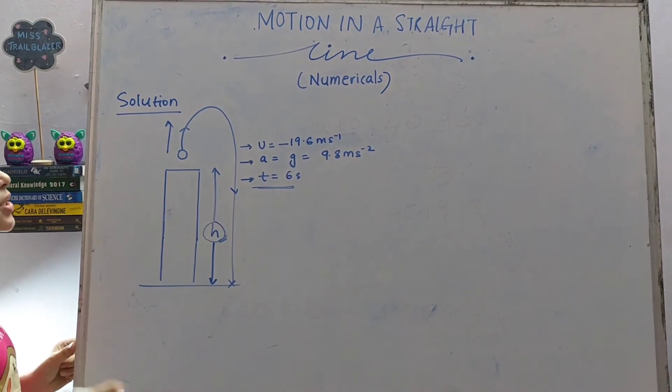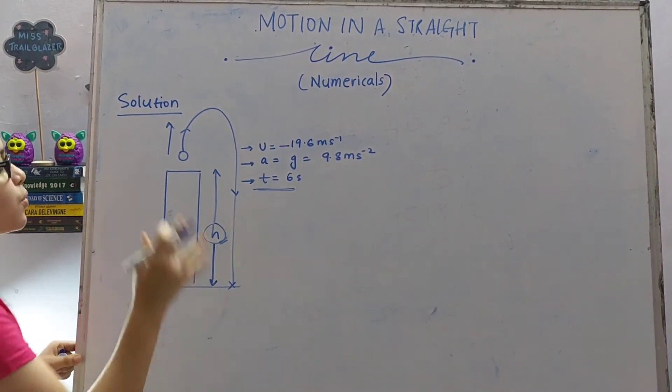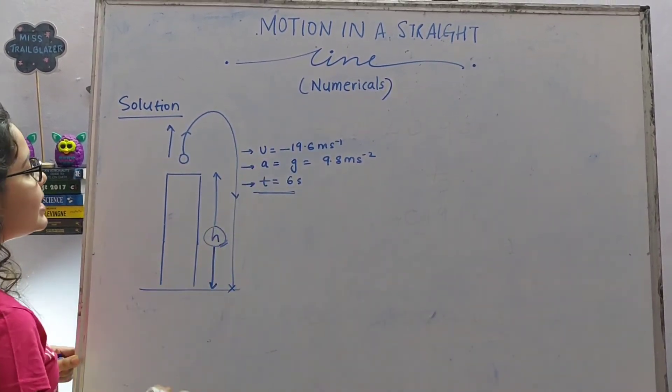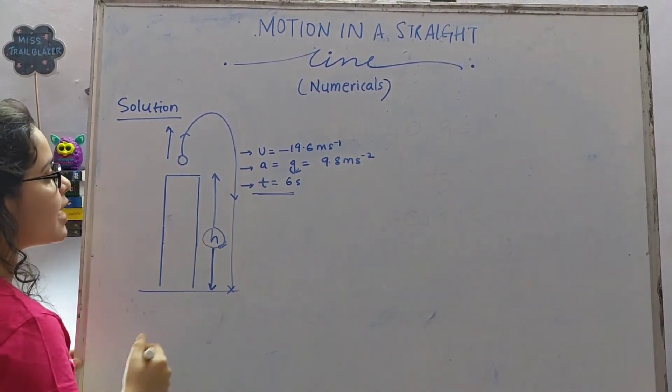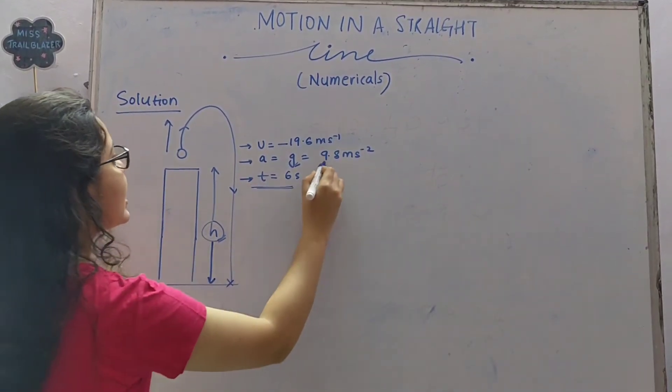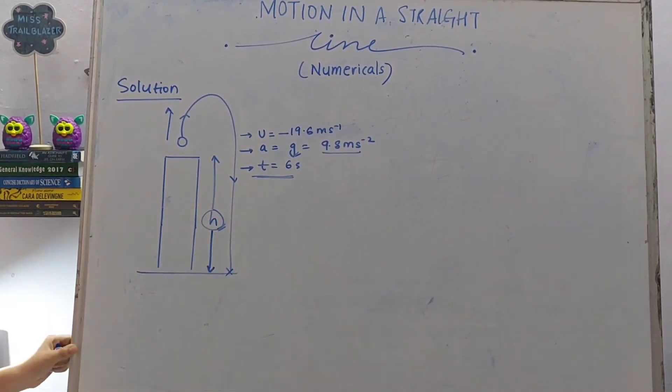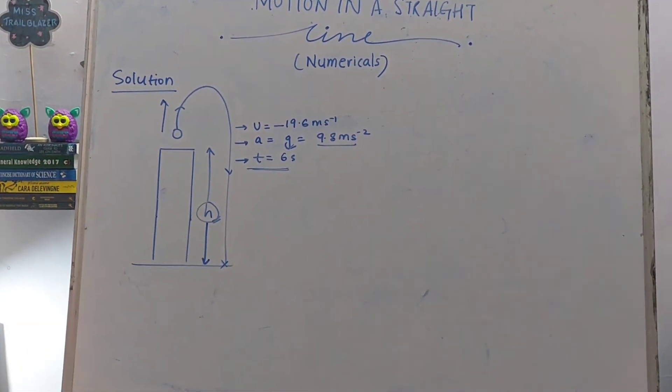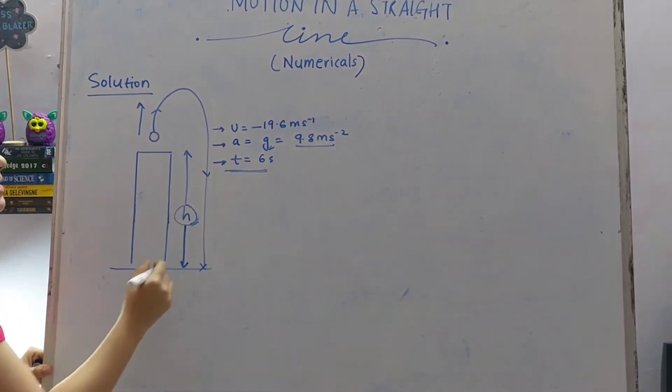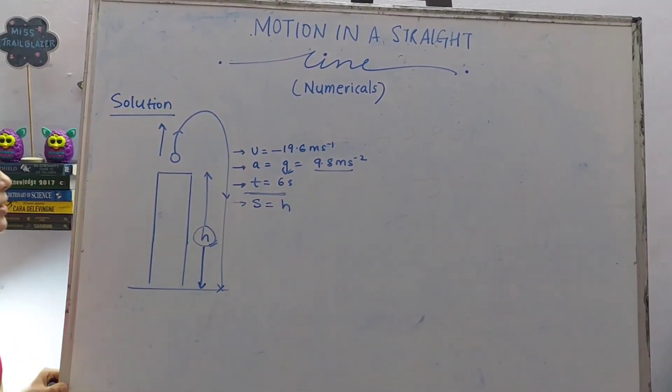Here the acceleration is not given to us. So what is the most probable acceleration in this case? That is acceleration due to gravity. So a equal to g, that is 9.8 meter per second square. And time is already given. So out of this we need to calculate an unknown distance. Here our distance is nothing but the height.